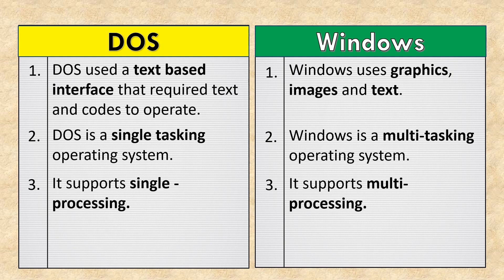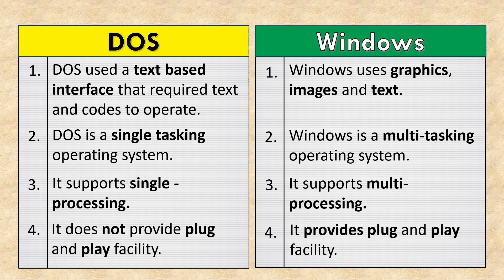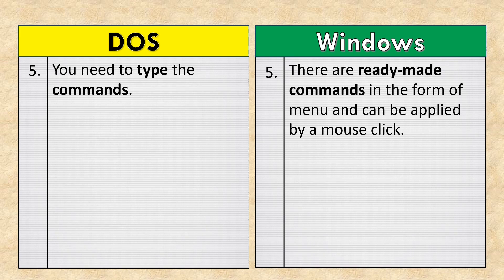DOS supports single processing, while Windows supports multiprocessing. DOS does not provide plug-and-play facility, whereas Windows provides plug-and-play facility. In DOS, you need to type commands, but in Windows there are ready-made commands in the form of menus that can be applied by a mouse click.